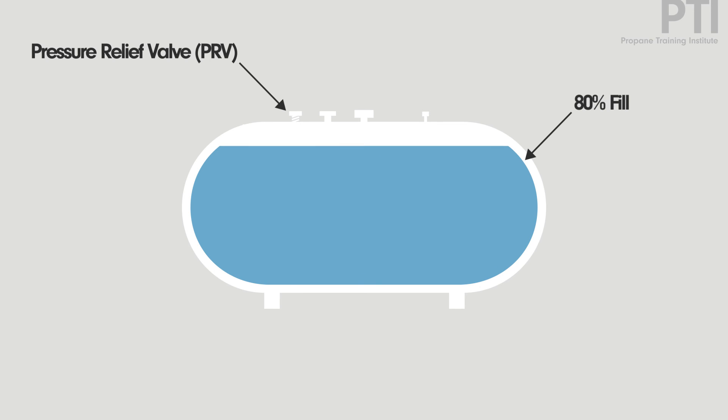To allow for safe expansion and pressure increases, propane containers are only filled to a maximum of 80% capacity. Doing otherwise could result in an unwanted release.